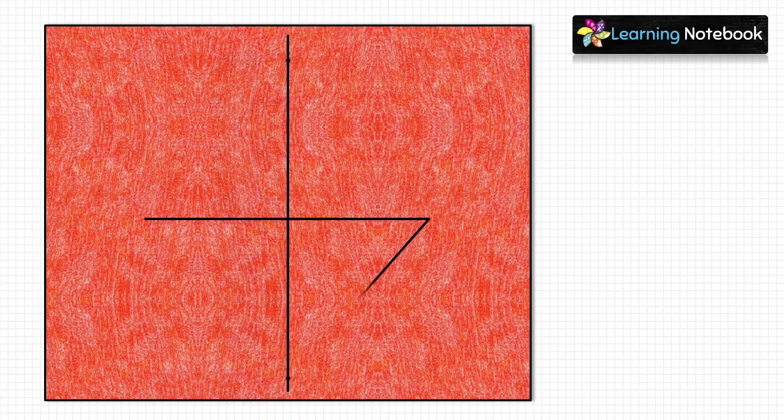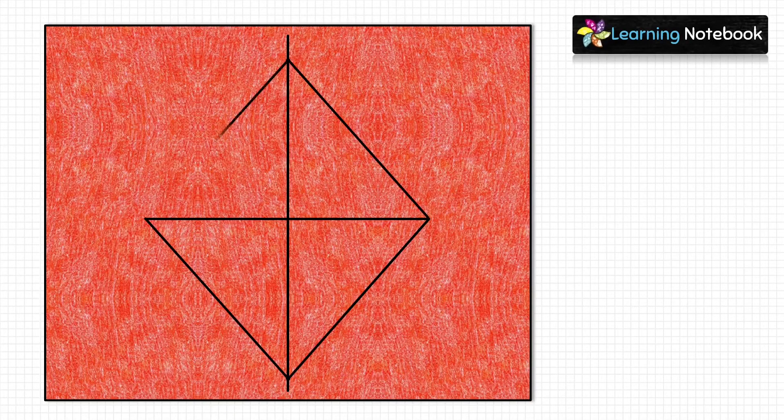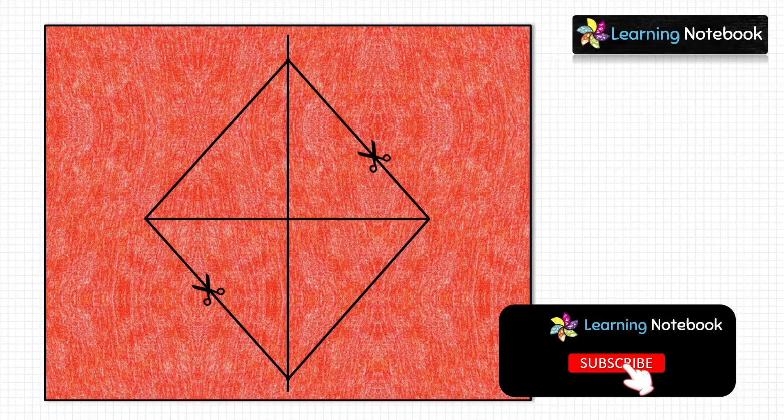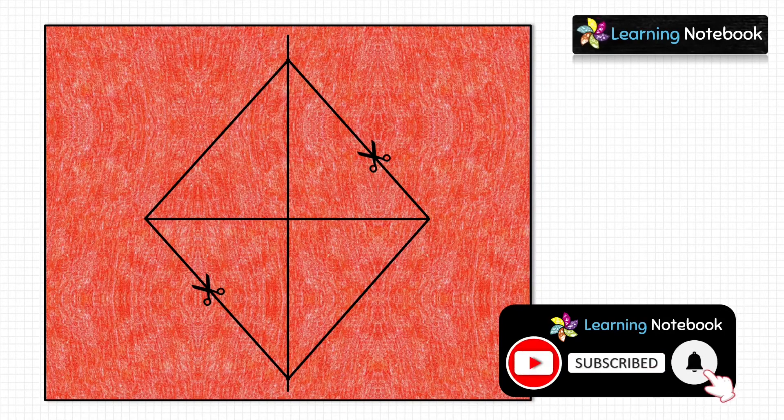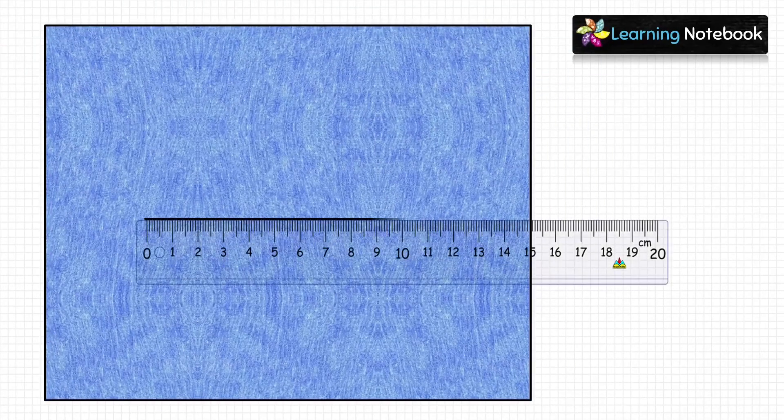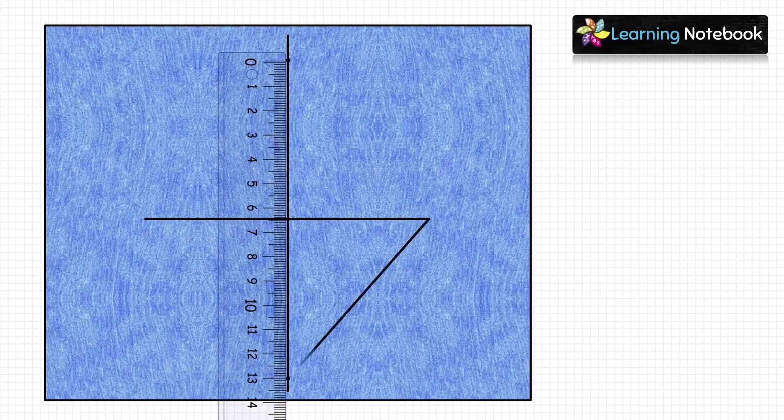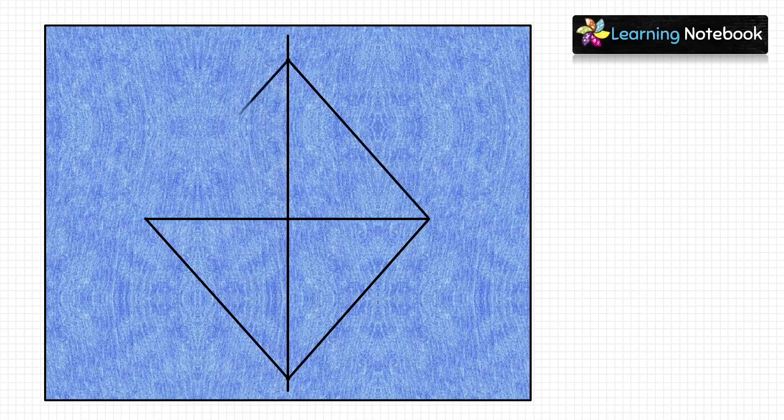Now we will join the points as shown here with the help of a ruler, and we get a rhombus. Now let's cut out this rhombus with the help of a pair of scissors. Similarly, let's draw the rhombus with same dimensions on a blue colored sheet. So this is our second rhombus and now we will cut it out using scissors.